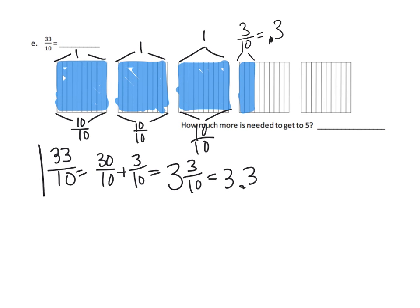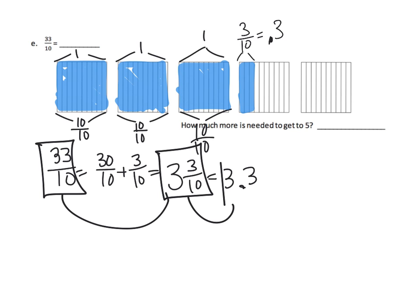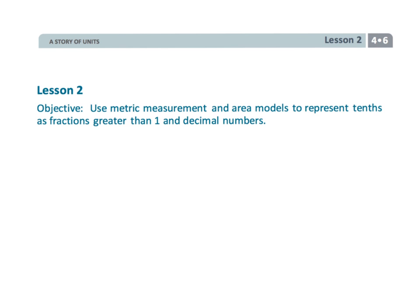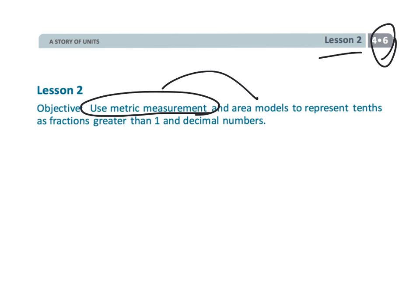We're connecting the fraction to the mixed number to the decimal. The last question: how much more is needed to get to five? You have one whole plus seven tenths, so one and seven tenths, or 1.7. That wraps up fourth grade module six lesson two — using metric measurement and the area model to help students understand the connection between decimals and fractions.